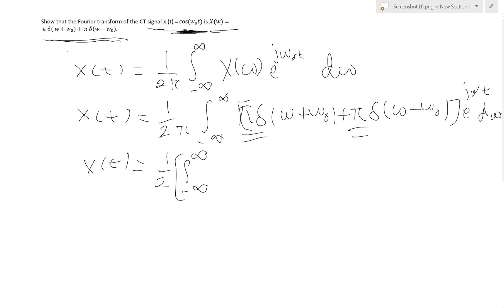From negative infinity to infinity of δ(ω + ω₀) e^{jωt} dω plus integral from negative infinity to infinity δ(ω - ω₀) e^{jωt} dω.